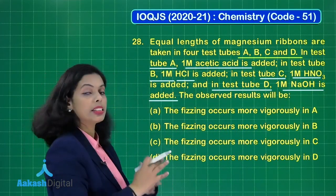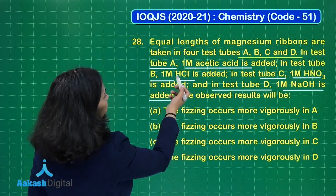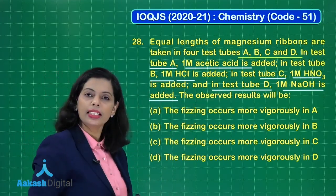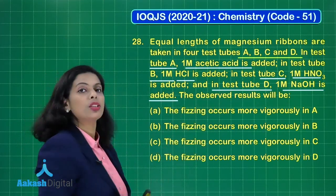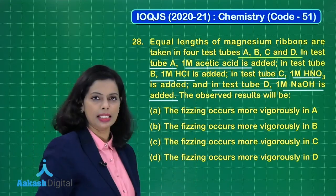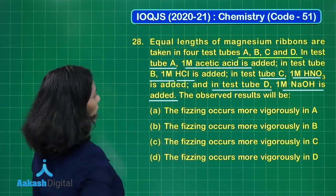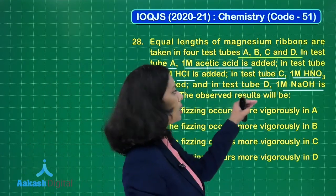If you just look at the substances given here, HCl and HNO3 are strong acids, and if I am talking about NaOH, it's a strong base. But if I am talking about acetic acid, it's a weak acid, an organic acid. Now further, what they are asking: the observed results will be.